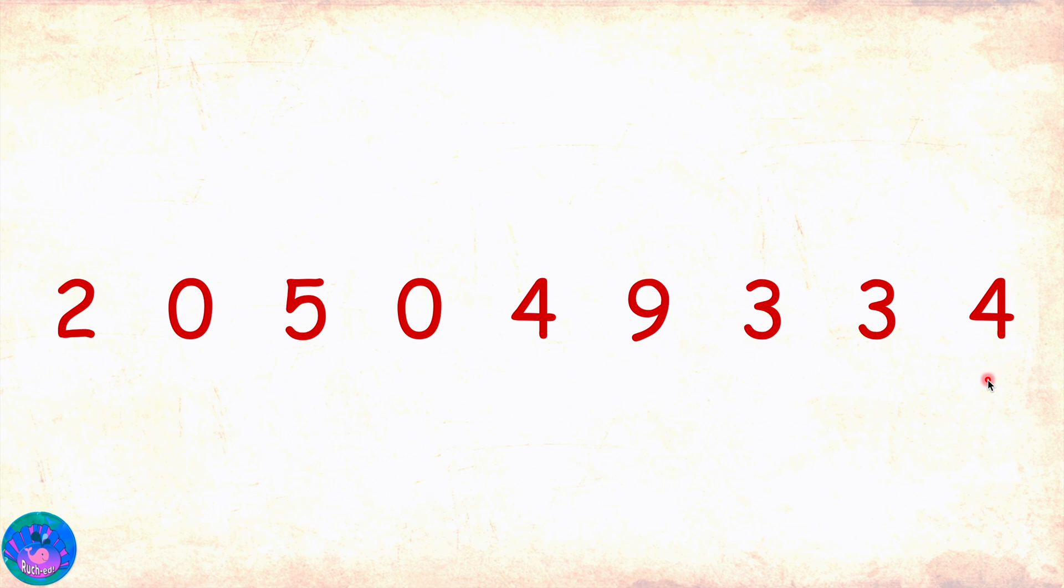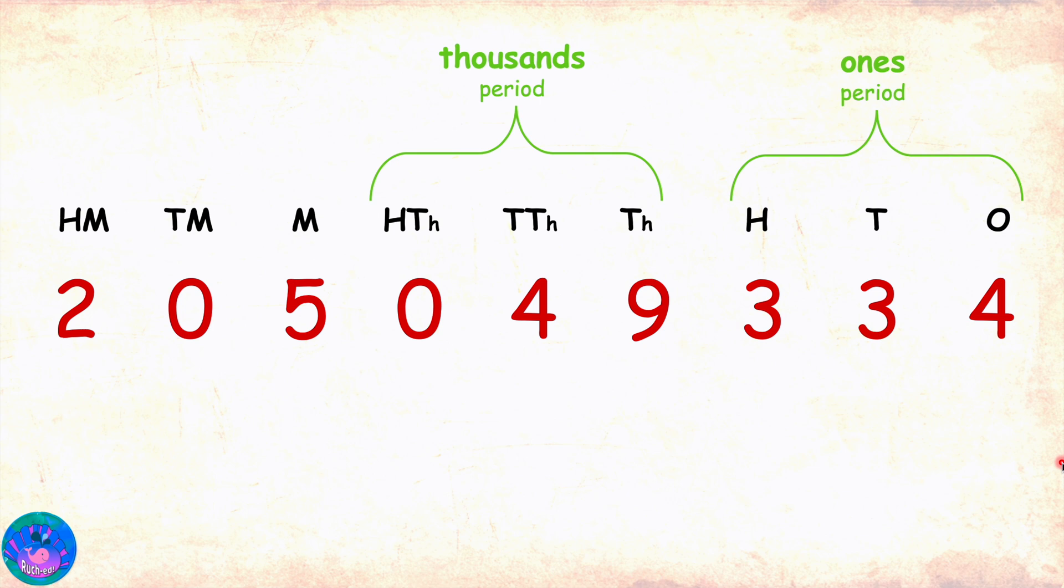So, here are the places. Ones, tens, hundreds, thousands, ten thousand, hundred thousand, million, ten million, hundred million. We group the digits into periods of three places each. Ones period, thousands period, millions period. We put a comma to separate the periods.